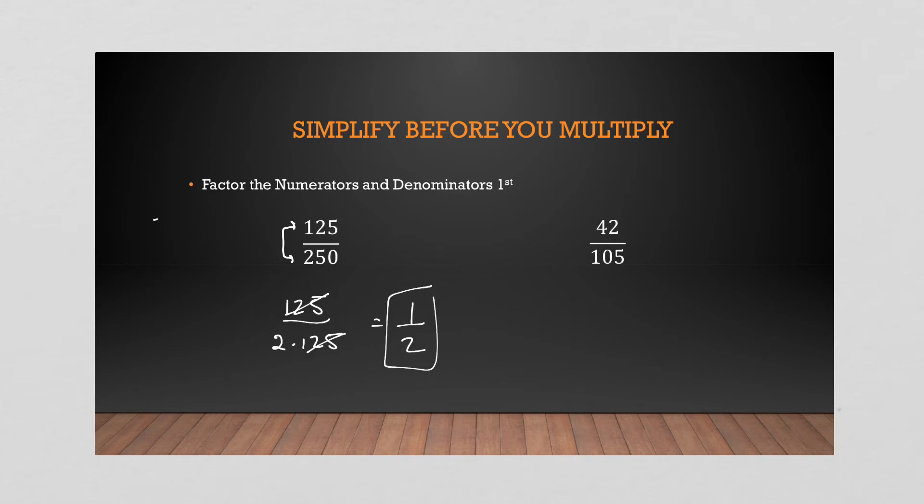Otherwise, if you were to break this down, you'd have five times five times five over two times five times five times five, and you would get one half.